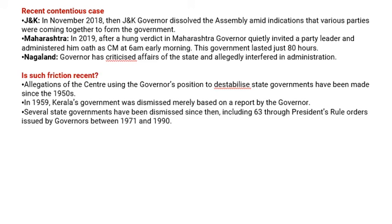This is not the first time. Even in Karnataka, the governor has played a major role by taking the side of the central government. The allegation is that the center is using the governor's position to destabilize state government power. In 1959, the Kerala government was dismissed based on a report by the governor. Several state governments have been dismissed since then, including 63 through president's rule orders issued by governors between 1901 and 1990.